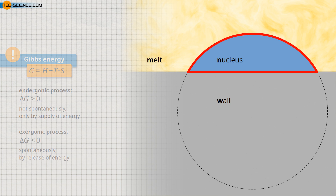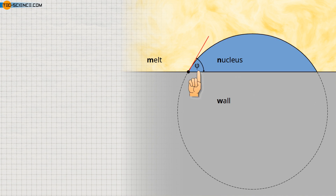The derivation of the laws for heterogeneous nucleation is analogous to homogeneous nucleation. A vessel wall facing the melt, on which a nucleus forms, serves as the example. Due to the acting surface tensions, the nucleus has the shape of a spherical cap. The angle at the point of contact between the nucleus surface and the vessel wall is referred to as the contact angle.